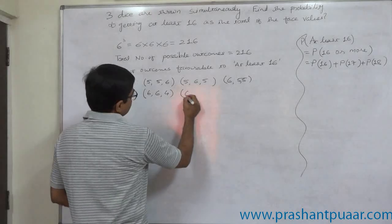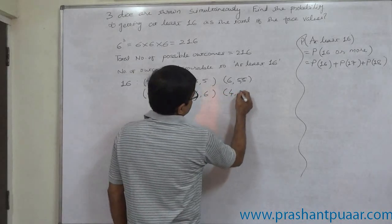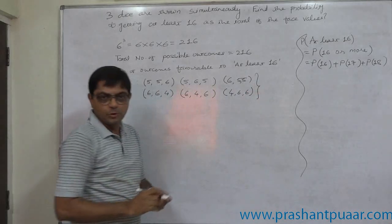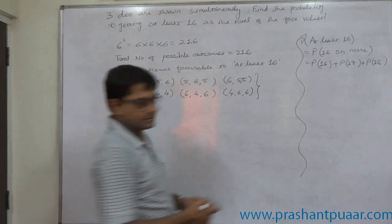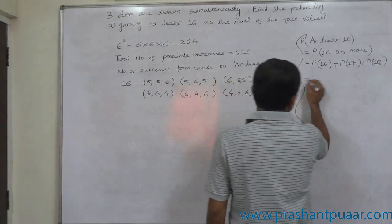So 16 is possible in 6 different ways. That means probability of 16 is 6/216.